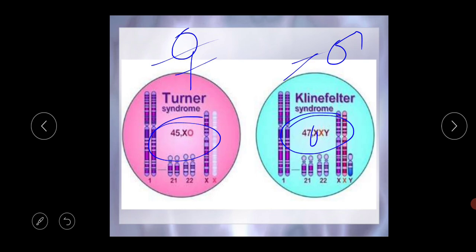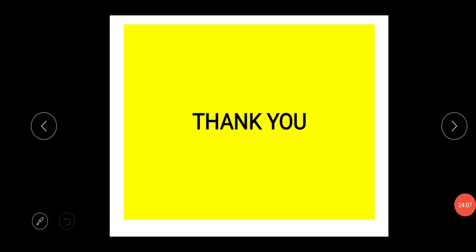This concludes today's class covering thalassemia, cystic fibrosis, Down syndrome, Klinefelter syndrome, and Turner syndrome. In our next class we will start a new chapter — chapter 6. I have made a total of seven sessions on this chapter, so please go through them properly. If you have any queries, ask me immediately. Thank you, bye.